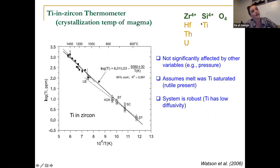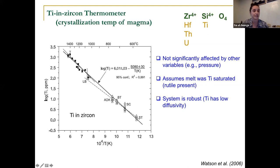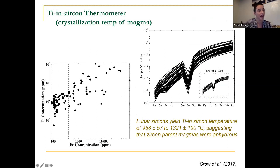Titanium can substitute into the zircon crystal lattice into the silicon site, but it doesn't always like to — its ionic radius doesn't fit well — so that process is controlled by temperature. This assumes the melt was saturated in titanium, meaning rutile is present, but we find this process is not dependent on pressure — it's really just temperature controlled. So if you look at the titanium concentrations in your zircons, that tells you something about the temperature at which that melt crystallized.